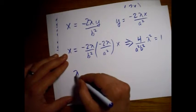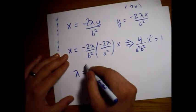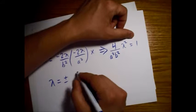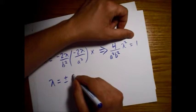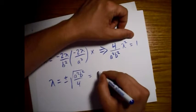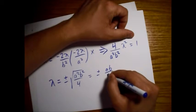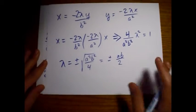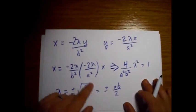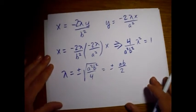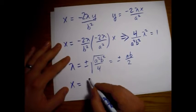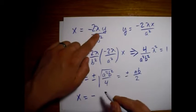So λ = ±√(a²b²/4) = ±ab/2. We'll pick whichever sign gives us a positive x or a positive y.